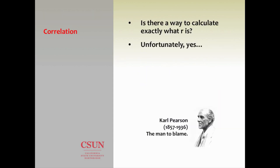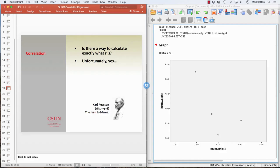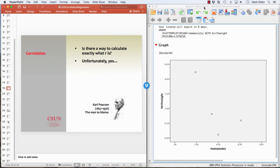We're going to move back to SPSS and Excel to get our correlation value. We know from our scatter plot that we probably have a negative correlation because of the shape of the dots, and it's probably not perfect because the dots are not forming a line.